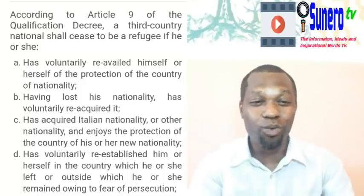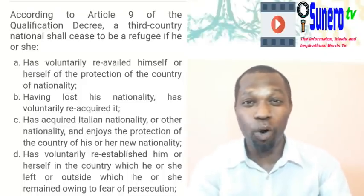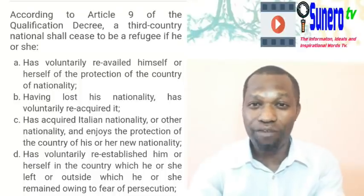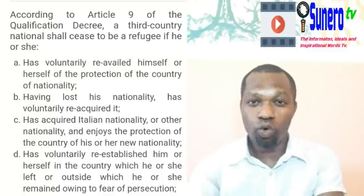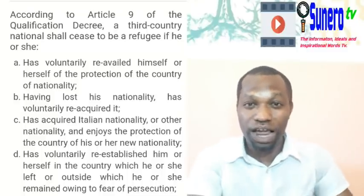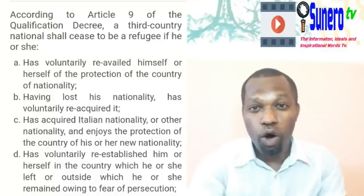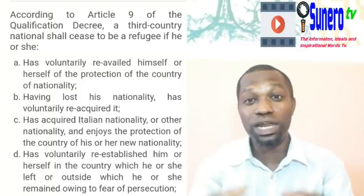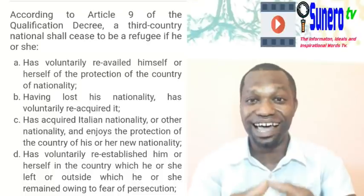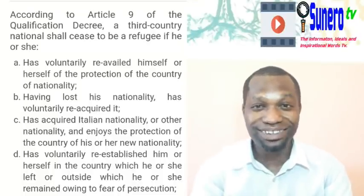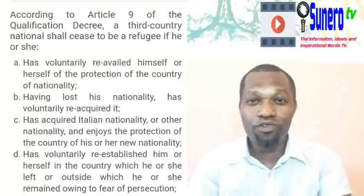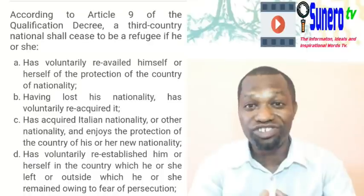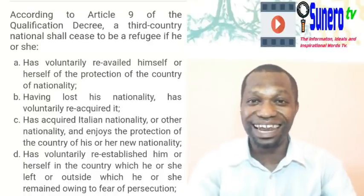Number three: if you have acquired Italian nationality, you cease to be a refugee. For those having a zero document, if you are working and have three years' schooling and have gotten the B1 exam, quickly change it. Even if you have claimed gay, after getting Italian citizenship, you can do whatever you want. That document cannot be taken away from you again except on grounds of terrorism or crimes against the state.